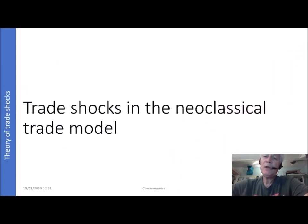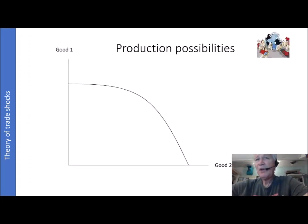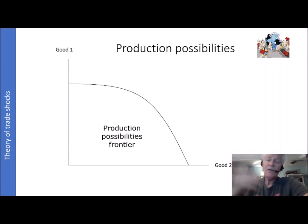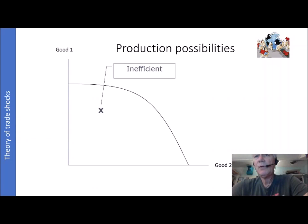That brings me to the fourth thing to discuss: trade shocks. I'm going to use the neoclassical trade model to investigate what this could mean theoretically, using a very basic model of international trade with two goods. The starting point is a description of production by means of the production possibilities function. This is a frontier — we can produce all combinations of goods inside this curve, but the frontier is the maximum we can produce. We can produce inside, but that is inefficient. We cannot produce outside because that is beyond the given technology.